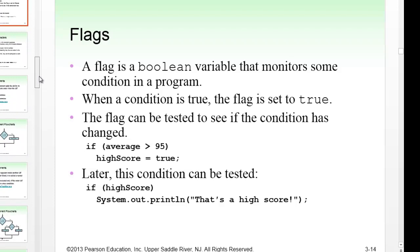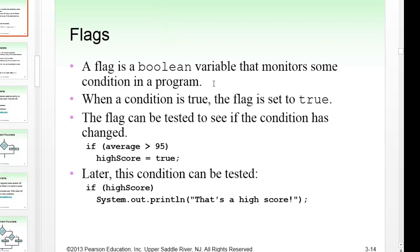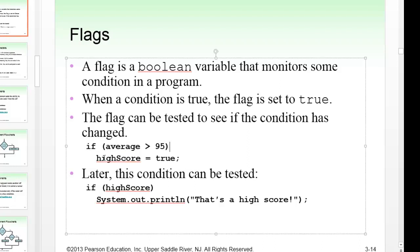Next, let's talk about flags. A flag is a boolean variable that monitors some condition in a program. When the condition is true, the flag is set to true, and it can later be tested to see if the condition has changed. For example: if average > 95, set boolean highScore = true. Then later: if highScore — since highScore is already a boolean, you don't need a relational operator in the if condition. If highScore is true, print 'That's a high score.'